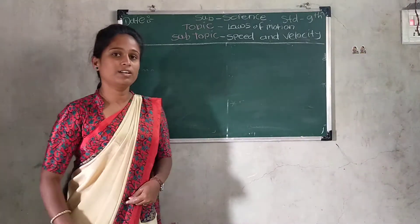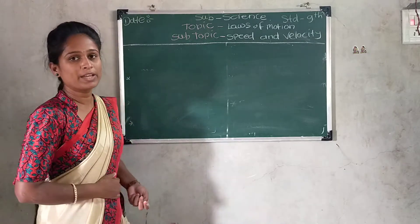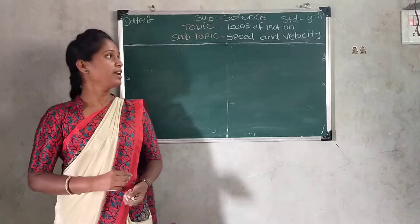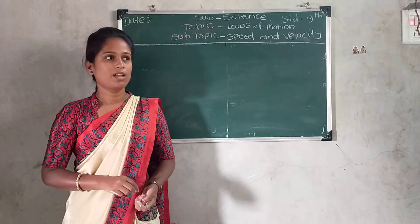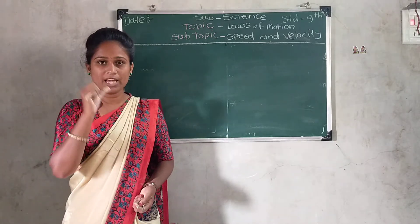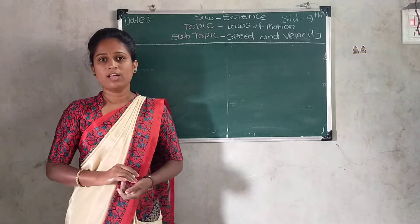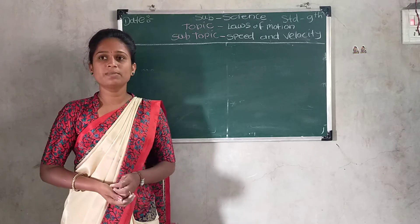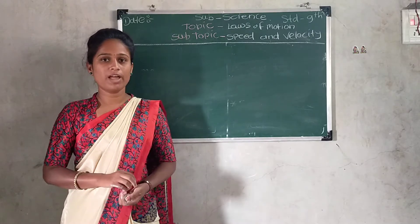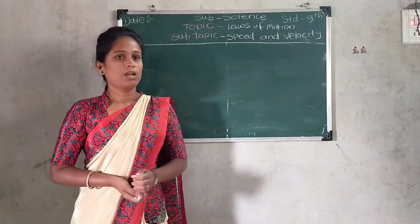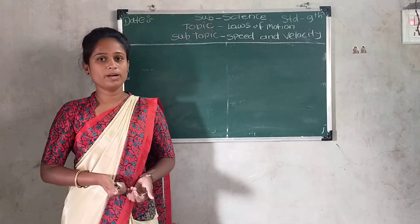Today we are going to learn about speed and velocity. What is speed? The distance covered per unit time is called speed. What is velocity? The displacement covered per unit time is called velocity. The unit of velocity is meter per second.